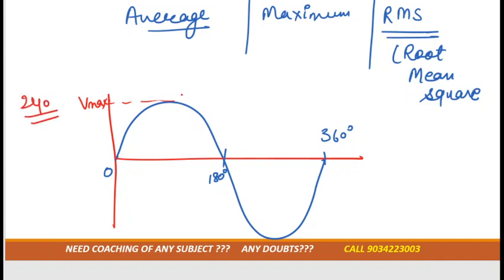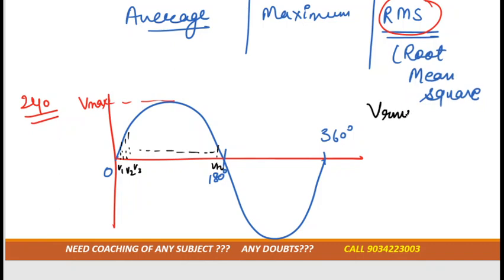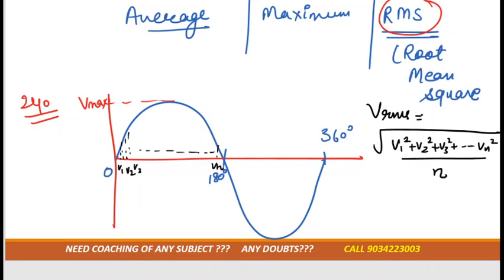Now we need to know the RMS value and how to calculate it. For that, we calculate the voltage at each instant of time — at this point voltage is V1, at this point V2, at this point V3, and so on up to VN. So V_RMS is calculated as: root of the mean of the squares — that is √((V1² + V2² + V3² + ... + VN²) / N).